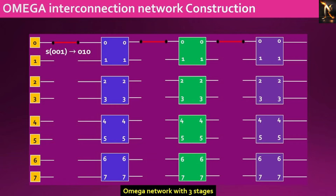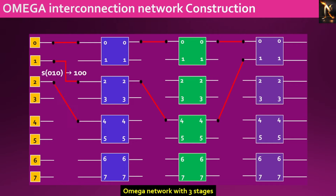Let's consider input port 1, represented as 001, and apply a shuffle operation. The output after the shuffle would be 010. Consequently, input port 001 is connected to the upper input of the switch. Similarly, connections are established for the remaining input ports.